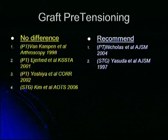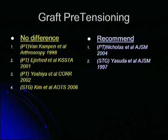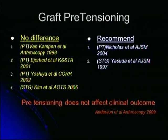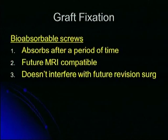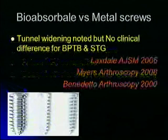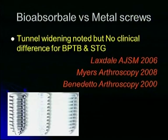Regarding graft pre-tensioning: a meta-analysis has found that whether you pre-tension the graft or not, it doesn't make a big clinical difference. For fixation devices, bio-absorbable screws are currently commonly used. Their advantages are that they get absorbed over time, they are MRI-compatible, and they don't interfere with future revision surgeries. Clinically, bio-absorbable and metal screws have given equally good results, but tunnel widening is slightly more with bio-absorbable screws.